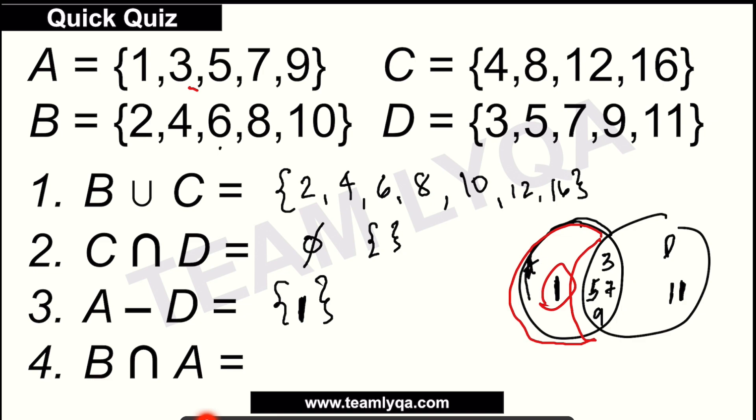Next we have B intersection A. So again, looking at the intersection of B and A, let's check. 1, not there. 3, no. 5, no. 7, no. 9, no. Because this is all odd numbers. This is all even, right? So that means this is also a null set. It has no contents. There's no intersection.